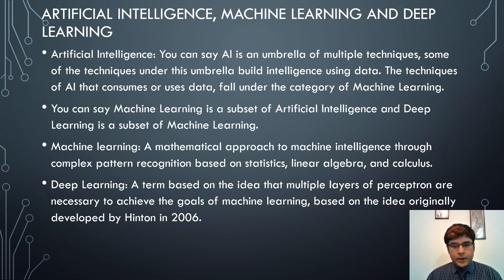Machine learning is a subset of artificial intelligence, and deep learning is a subset of machine learning. Machine learning is a mathematical approach to machine intelligence through complex pattern recognition based on statistics, linear algebra, and calculus. Deep learning is based on the idea that multiple layers of perceptrons are necessary to achieve the goals of machine learning, originally developed by Hinton in 2006.